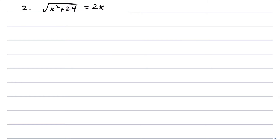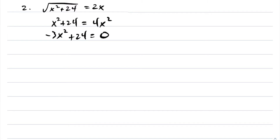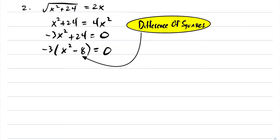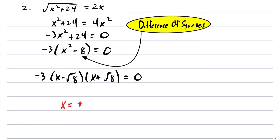Let's look at another problem. The same idea — you want to isolate the radical. We've already isolated for it, so I'm going to square both sides. After squaring both sides, we solve for x by bringing everything to one side. Factoring out the negative 3, we're left with x squared minus 8 inside, and we can do difference of squares. Solving for x, we end up getting x equals plus or minus the square root of 8.